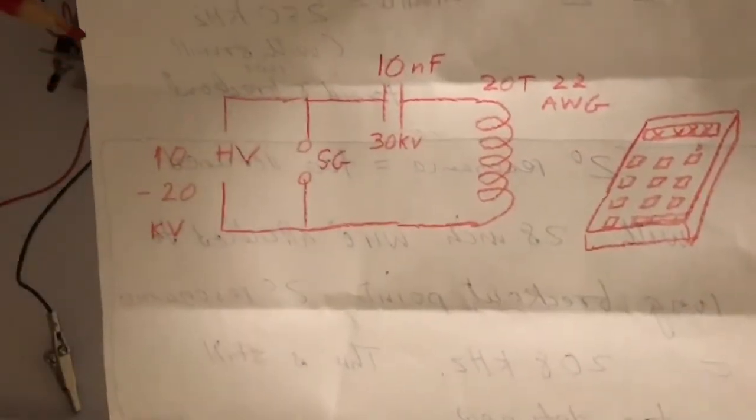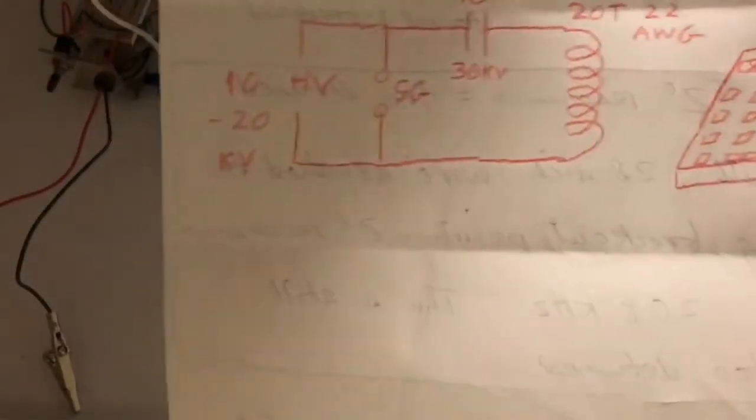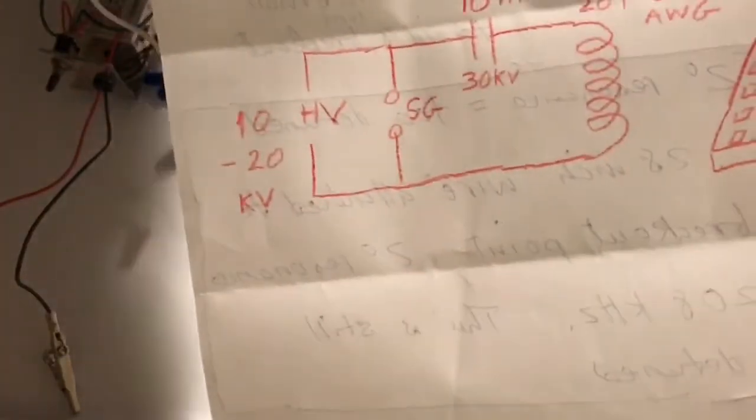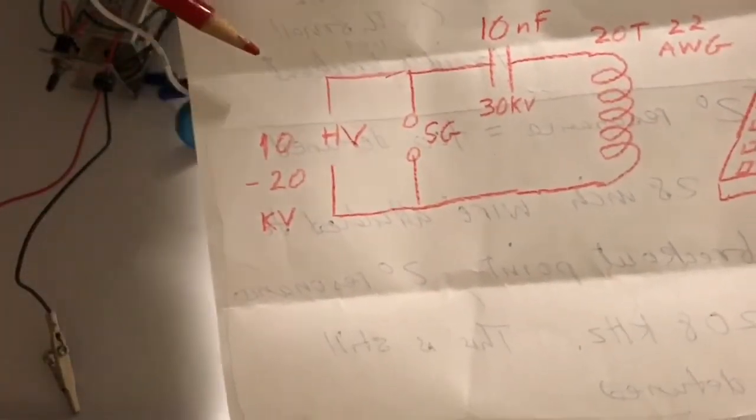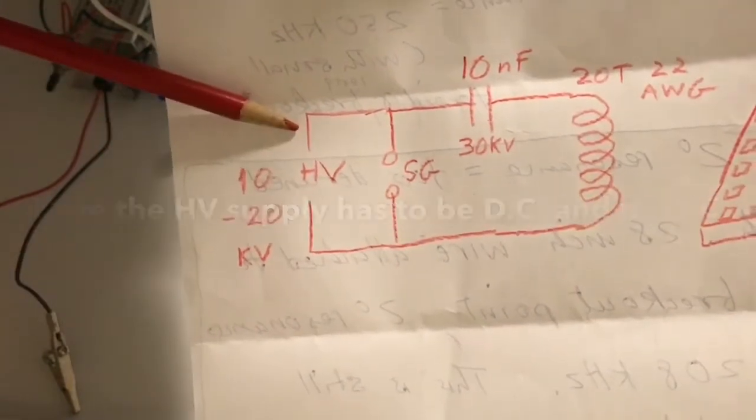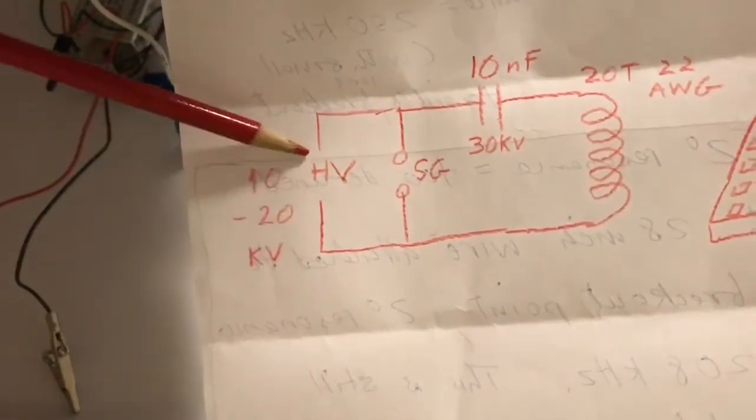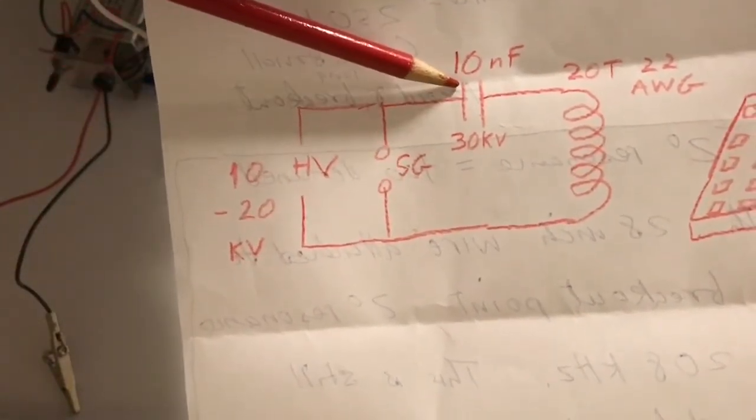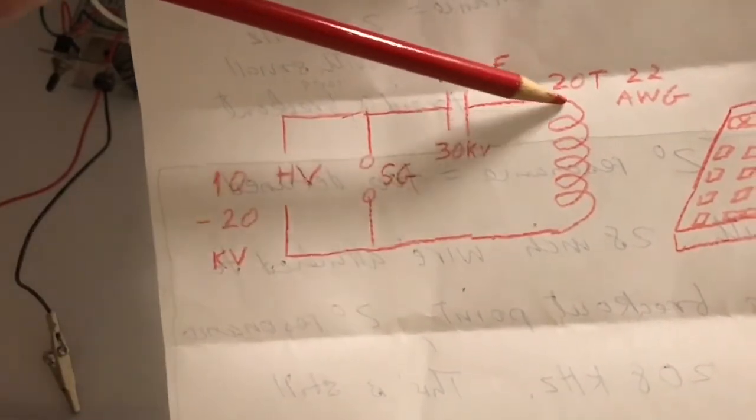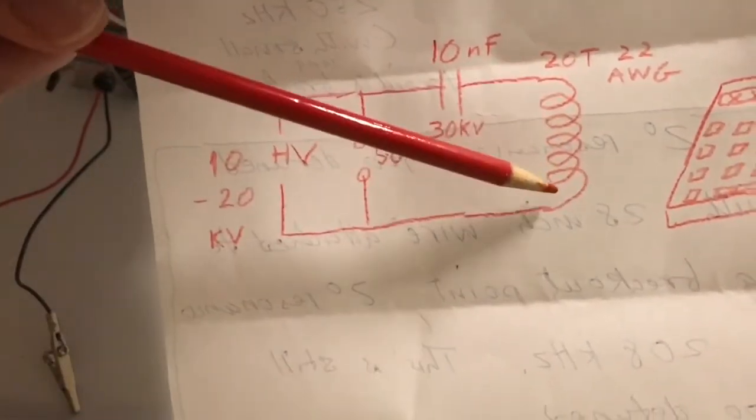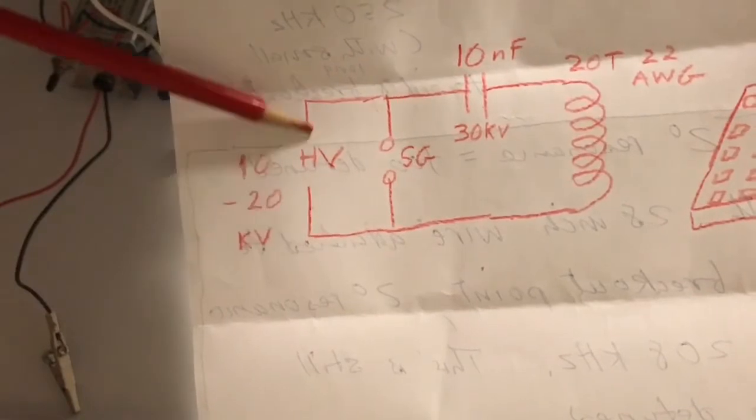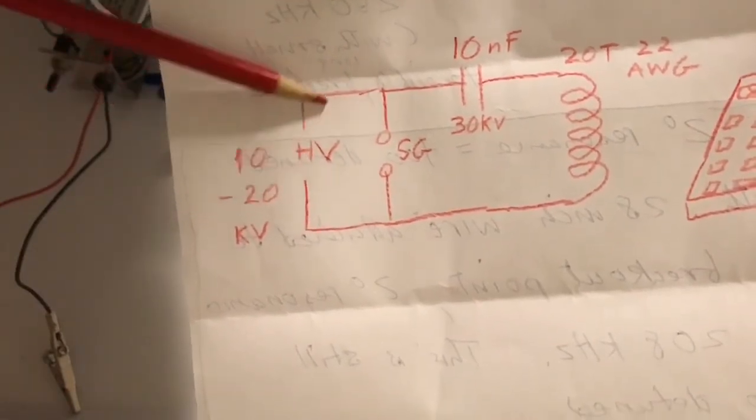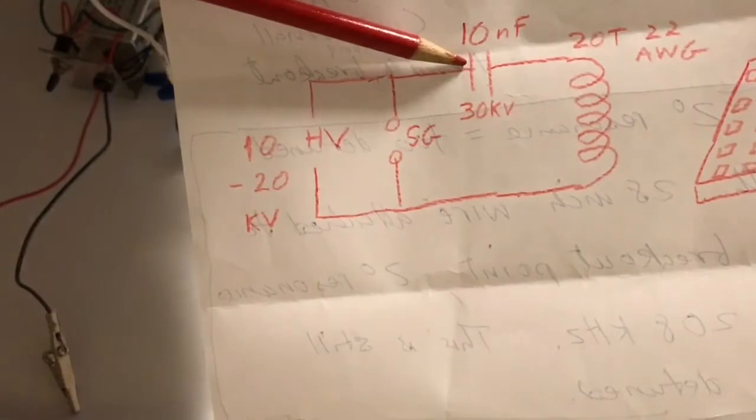So this is the circuit diagram for a simple electromagnetic pulse generator. Here's your high voltage supply, connected to a high voltage capacitor and in series with the coil, which is 20 turns.